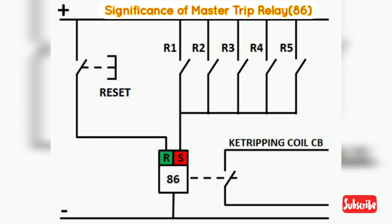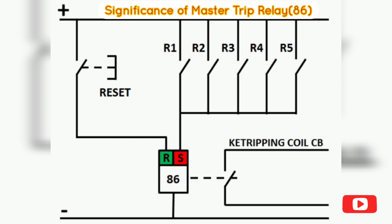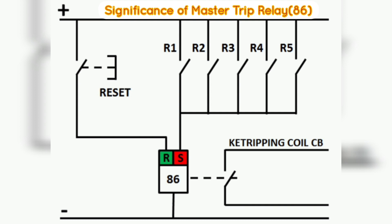Next we learn about the significance of Master Trip Relay 86. First, the Master Trip Relay receives signals from protection relays and outputs a tripping command to the trip coil of a circuit breaker, thus providing isolation between the protection relays and the circuit breaker's trip coil. If we directly wire protection relays to the trip coil and a fault occurs in the trip coil, it may cause burning of the protection relay contact. Since protection relays are expensive, direct interfacing with the trip coil is not advisable. A Master Trip Relay is therefore used to provide isolation.